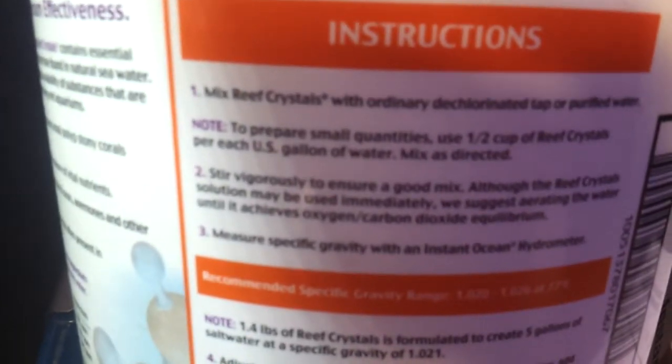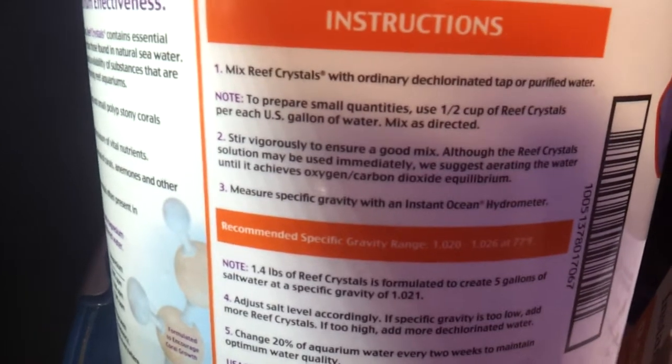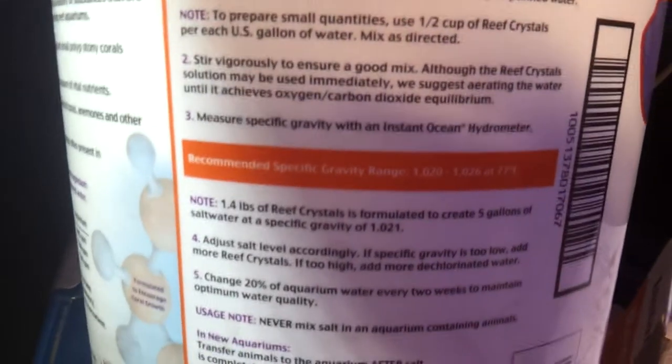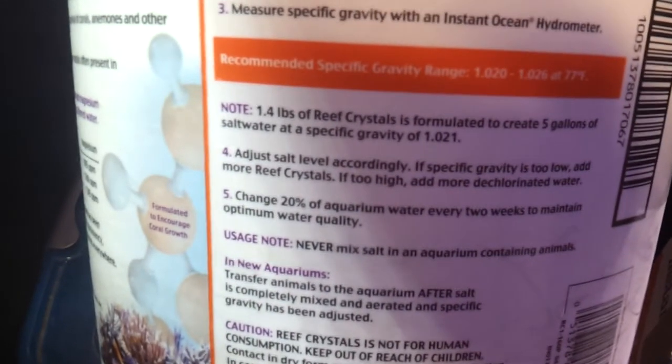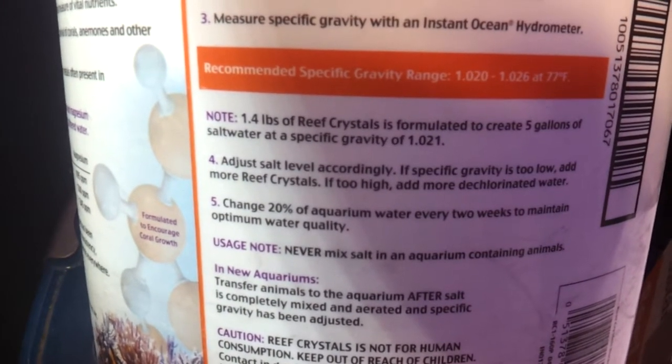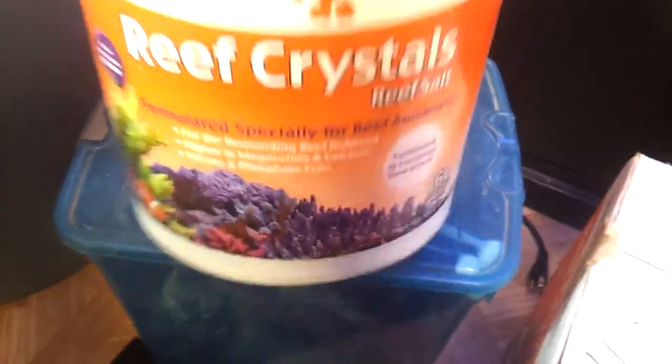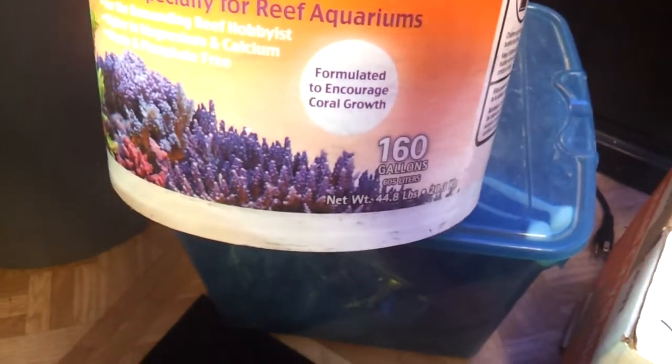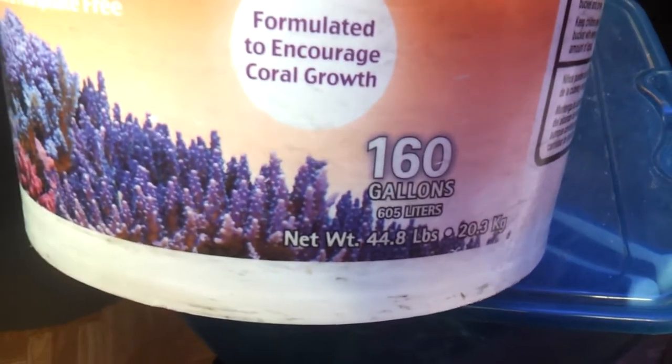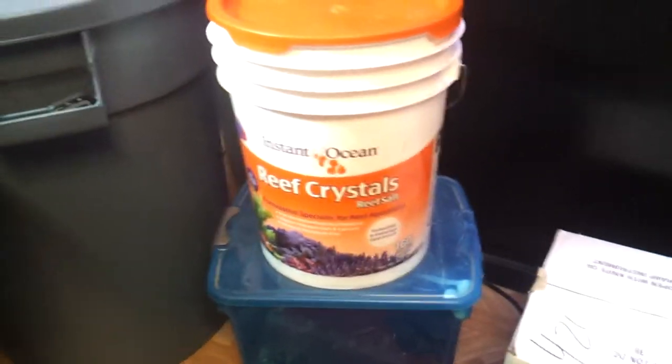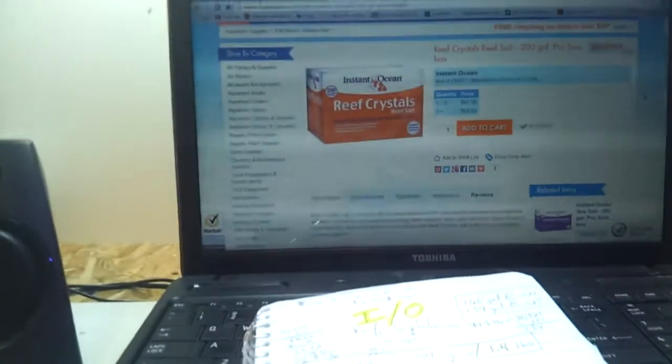The explanation it gives you here on the bucket is really not too clear. It says to prepare small quantities use a half a cup. It also says 1.4 pounds of reef crystals in 5 gallons gives you a specific gravity of 21. Now it tells you in the front that it's reef crystals, so nobody runs their reef at 21. So it gives you 160 gallons and I can tell you right now you're not going to get 160 gallons out of that if you're running your salinity any higher than 21.